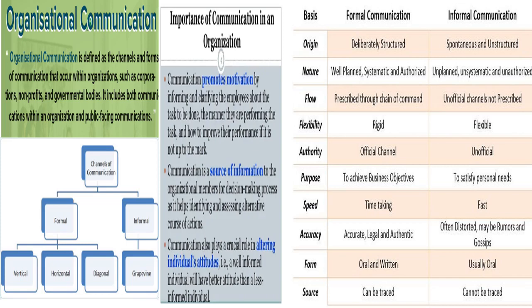Informal communication is called grapevine. In informal communication, there are different types: chain type, where A provides information to B, B to C, and so on. Then there are gossips, where information disperses among many people. Probability communication means having a set of information and sharing it not with everyone but with only some people, so there is a probability associated with that dispersion of information. Cluster type means communicating information only to your peers and colleagues and not to everyone.